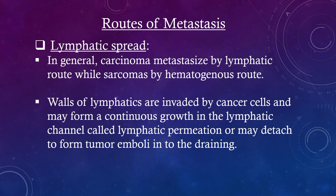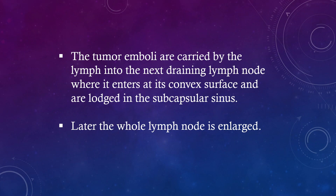Routes of metastasis. Lymphatic spread: in general, carcinomas metastasize by the lymphatic route while sarcomas spread by the hematogenous route. Walls of lymphatics are invaded by cancer cells and may form a continuous growth in the lymphatic channel called lymphatic permeation, or may detach to form tumor emboli into the draining lymphatics. The tumor emboli are carried by lymph into the next draining lymph node, where they enter at the convex surface and are lodged in the subcapsular sinus. Later, the whole lymph node becomes enlarged.